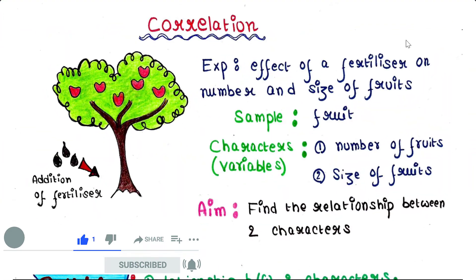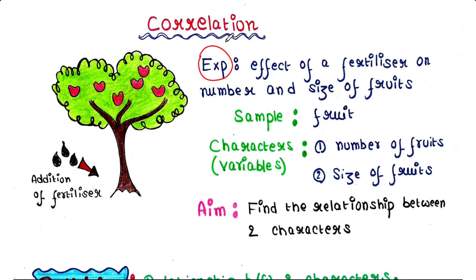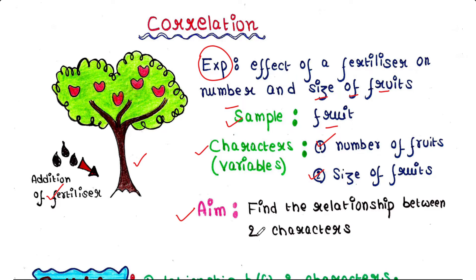Here we will talk about an experiment. Suppose we have made a fertilizer and we want to check whether it is effective or not. We are applying this fertilizer to an apple tree and we want to check whether the number and size of fruits are getting changed or not after applying this fertilizer. The sample is the fruit, and the two characters or variables are number of fruits and size of fruits.